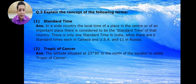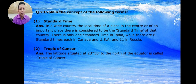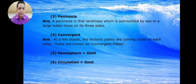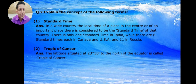Tropic of Cancer: the latitude situated at 23 degrees 30 minutes to the north of the equator is called the Tropic of Cancer. It is very simple — 23 degrees 30 minutes north of the equator. Tropic of Capricorn: the latitude situated at 23 degrees 30 minutes to the south of the equator is called the Tropic of Capricorn.